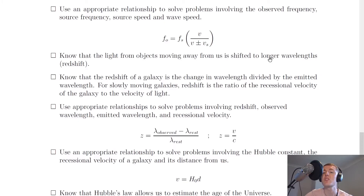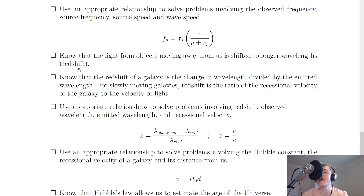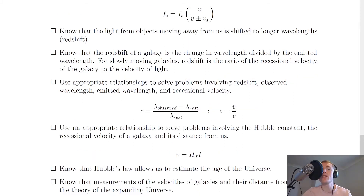Next, you should know that the light from objects moving away from us is shifted to longer wavelengths — this is known as redshift. The light from distant objects moving away is not necessarily becoming red, but because the wavelength increases as it travels through expanding space, it tends towards longer wavelengths at the red end of the ROY G BIV spectrum.